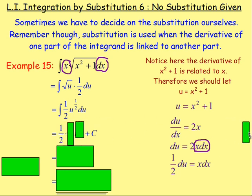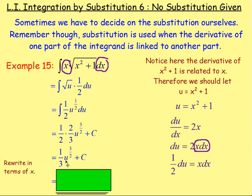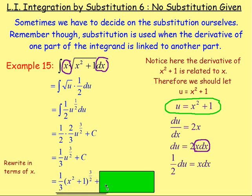Integrating that: we leave the one half as it is, and u — adding 1 to the power — goes to the power of 3 over 2, divided by 3 over 2. Remember, dividing by 3 over 2 is the same as multiplying by 2 thirds. That gives us 2 over 6, which simplifies to 1 third. So we have one third u to the power of 3 over 2. Finally, we rewrite it in terms of x: u equals x squared plus 1, so we replace u to get one third times (x squared plus 1) to the power of 3 over 2, plus c. And that's how it's done.